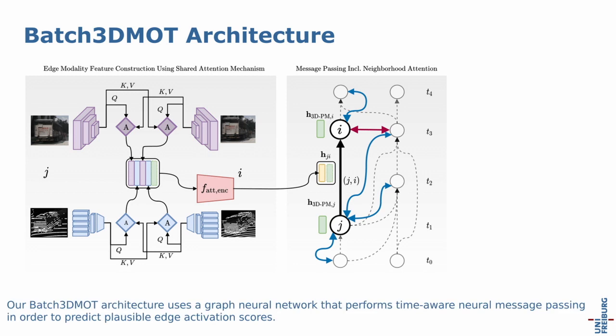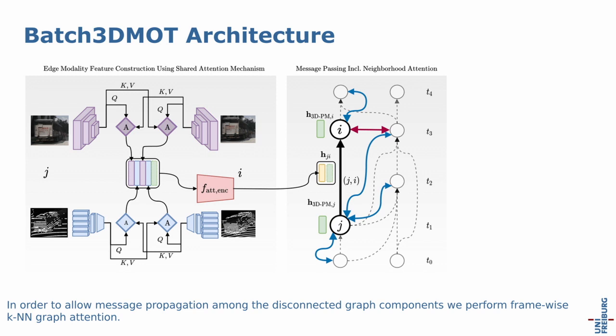Our batch 3D MOT architecture uses a graph neural network that performs time-aware neural message passing in order to predict plausible edge activation scores. In order to allow message propagation among the disconnected graph components, we perform framewise k-nearest neighbor graph retention.